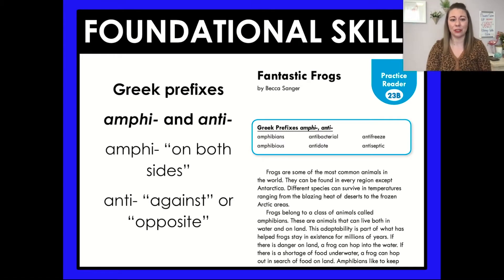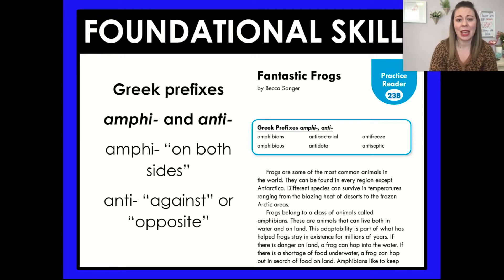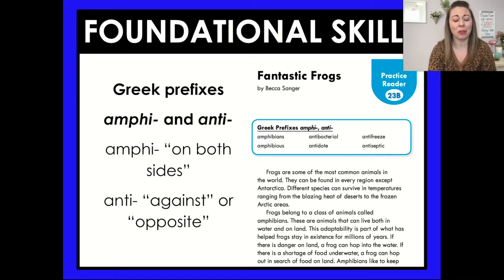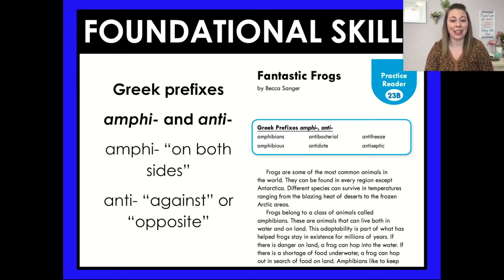Let's look at foundational skills. Today you have the Greek prefixes amphi and anti. Amphi means on both sides and anti means against or opposite. When we look at the words you're going to see in your practice read today — Fantastic Frogs — you have amphibians, amphibious, antibacterial, antidote, antifreeze, and antiseptic. Amphibians are animals that can live both on land and in water — on both sides. Remember that prefixes come at the beginning of a word, so we see amphi and anti at the beginning of all of those words.